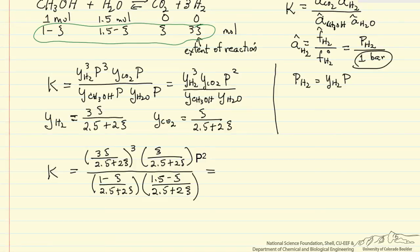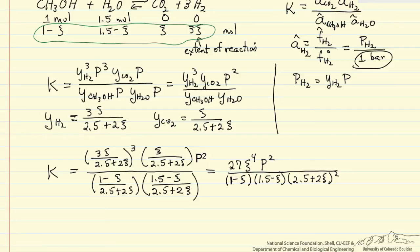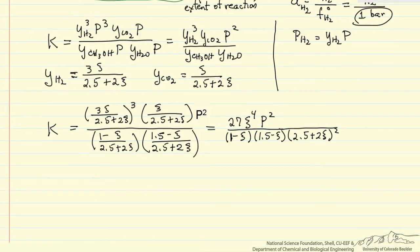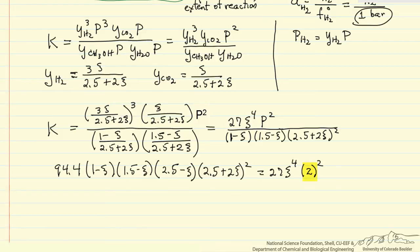I substitute in the mole fractions and simplify to get the equilibrium expression in terms of psi. Knowing the pressure, I substitute in K = 94.4 and further simplify by bringing denominator terms to the left side. I substitute in the pressure of 2 bar — remembering we must use pressure in bar because of our standard state and how activities were defined in terms of fugacities.